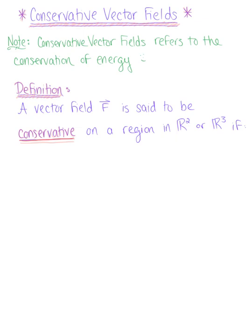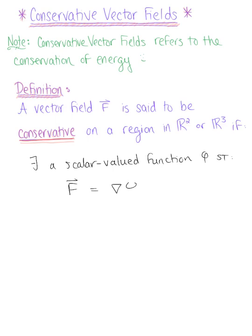Here is our formal definition. We say that a vector field F is said to be conservative on some region in R2 or R3 if there exists a scalar-valued function phi such that the vector field F is equal to the gradient of phi. Let's suppose that vector field F is in R3.